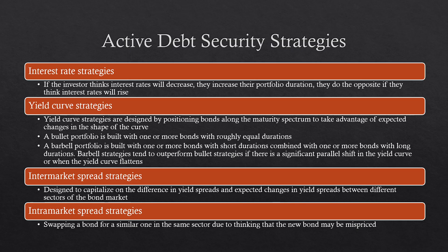There are also active and passive debt security strategies. The first active strategy is interest rate strategies. If an investor thinks interest rates will decrease, they would want to increase their portfolio duration, because the higher the portfolio duration, the larger the change in value for a given change in interest rates. If interest rates decrease, bond prices go up — you want a higher duration so the price goes up more. You do the opposite if interest rates are rising: you want a lower duration so the portfolio value doesn't fall as much.